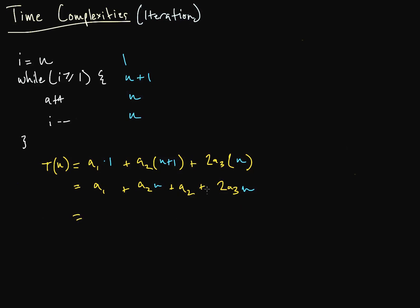And if we combine these, or group these together, we have a2 plus 2a3, this will be times n here, plus a1 plus a2. Right, our n is there. You can see that these are just constants. And this T of n is a linear time algorithm.